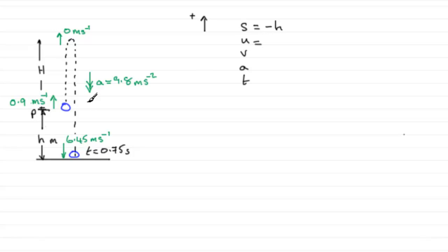U is going to be 0.9 meters per second. It's in the positive sense. V, the final velocity, it's downwards and it's minus 6.45 meters per second.